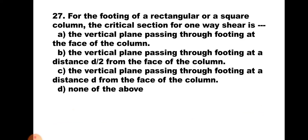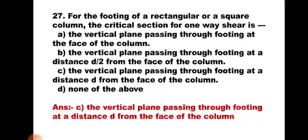Question number 27. For the footing of a rectangular or square column, the critical section for one-way shear is: A) the vertical plane at the face of the column, B) at a distance d/2 from the face, C) at a distance d from the face, or D) none of the above. For one-way shear, the section is taken at a distance d from the face of the column. Hence the correct answer is C, the vertical plane passing through the footing at a distance d from the face of the column. Thank you.